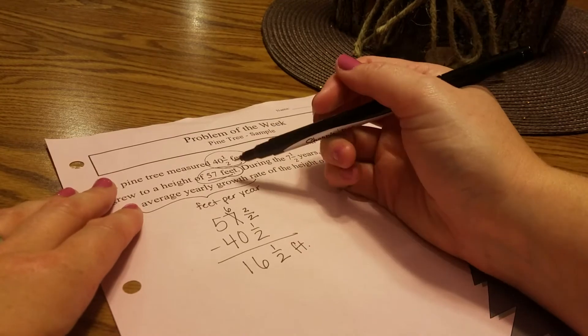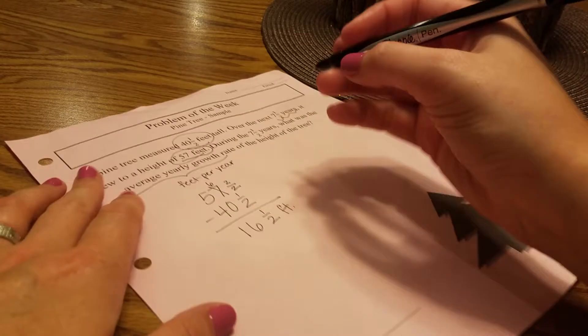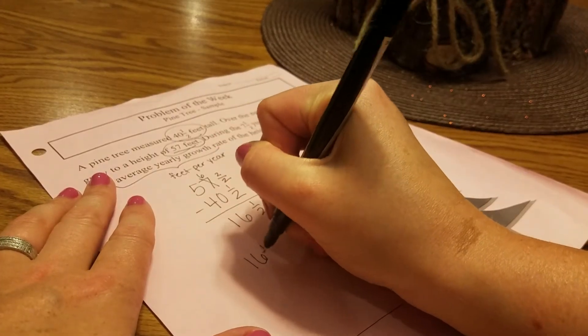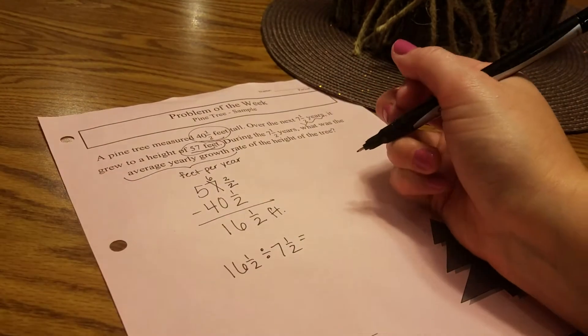But that happened over seven and a half years. So to get our average yearly growth rate, we have to do a division problem. We need to do 16 and a half divided by seven and a half.